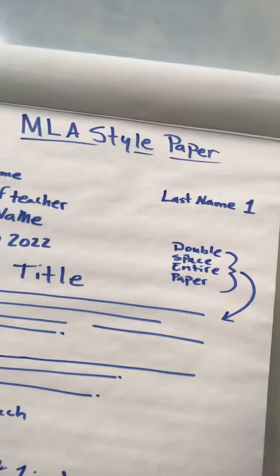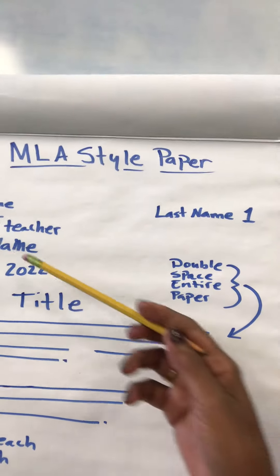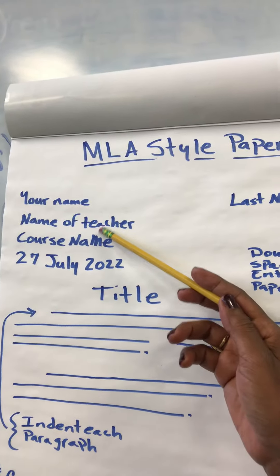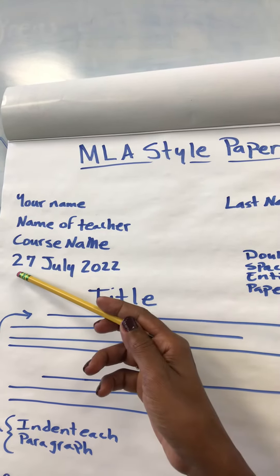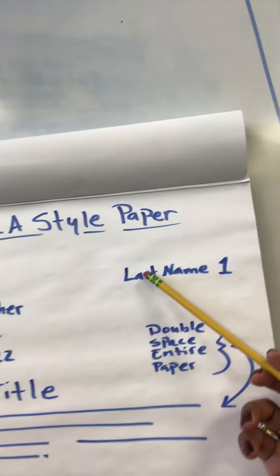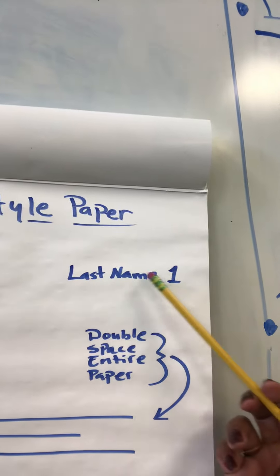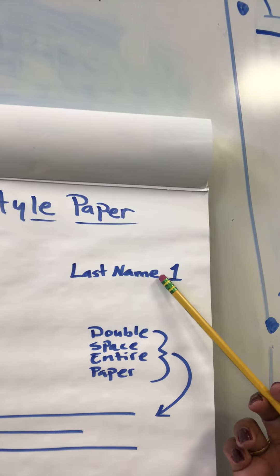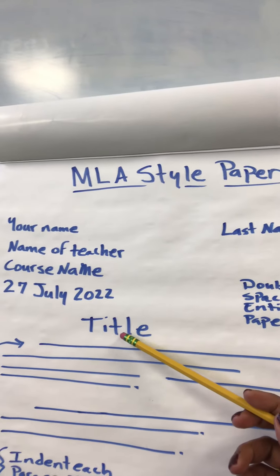When you're writing your paper you must have a title. The title should be centered, but don't forget you have your name, the name of your teacher, course name, and the date — the day first, then the month, and then the year. Then on the right-hand side you have your last name and the page number. That lets the reader know that that's page one.